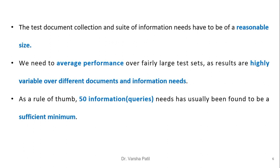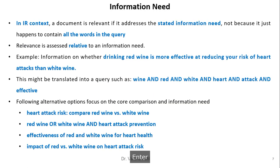The test document collection and suite of information needs must be of reasonable size. We need to take average performance only over fairly large test sets, as results are highly variable across documents and information needs. As a rule of thumb, 50 information needs or queries have usually been found to be a sufficient minimum to evaluate the system.